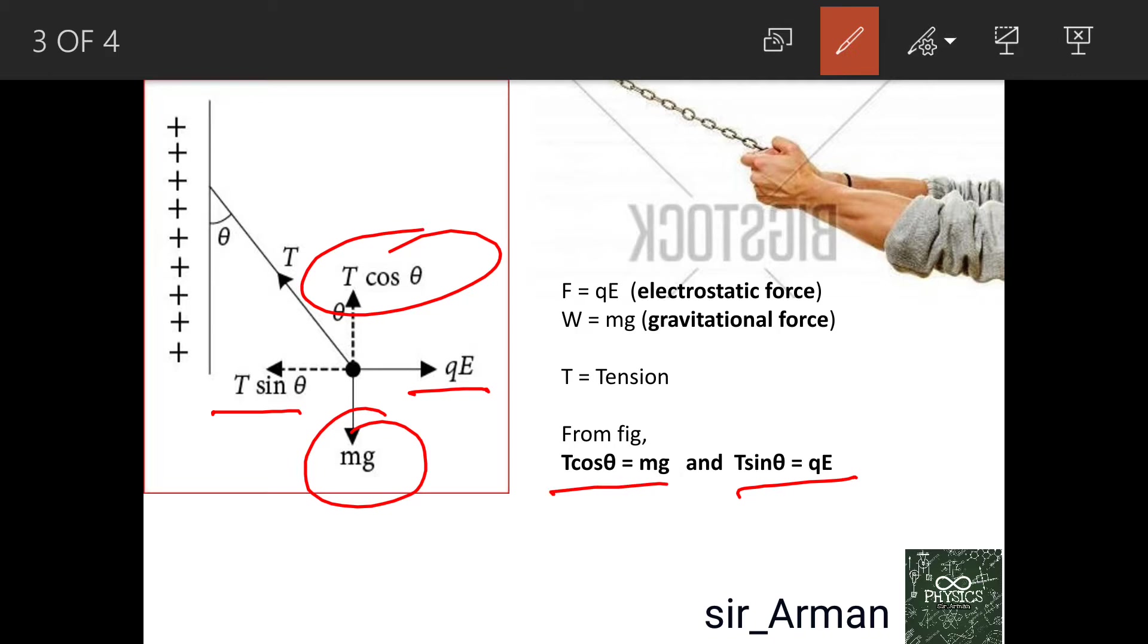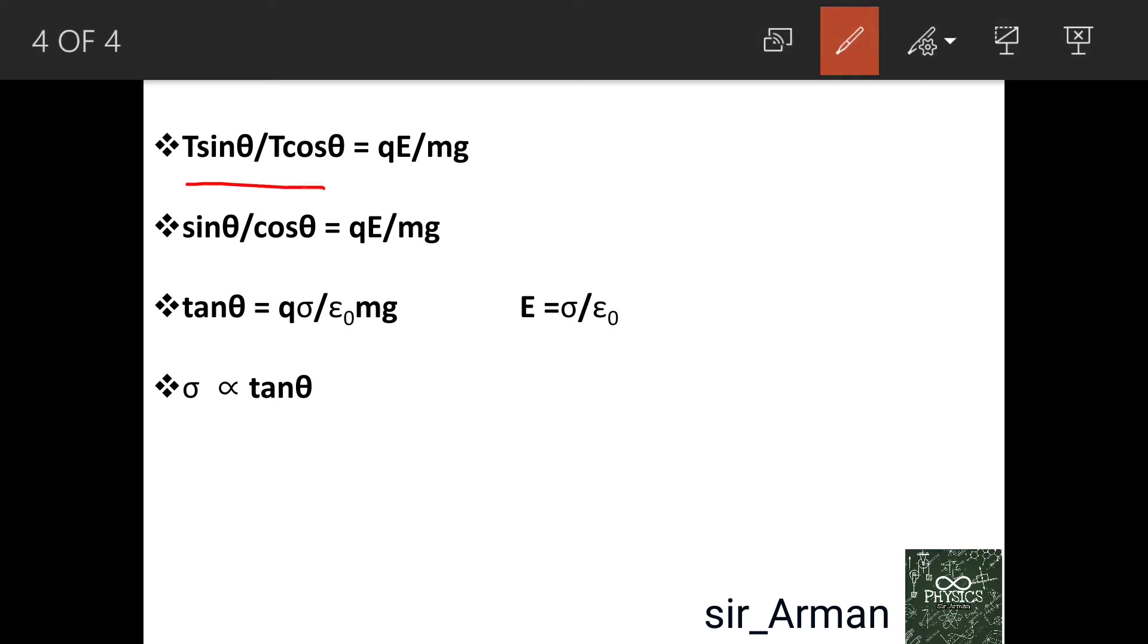Now if we take the ratio T sin theta by T cos theta, we get qE by mg. The T's cancel, so we get sin theta by cos theta, which equals tan theta.